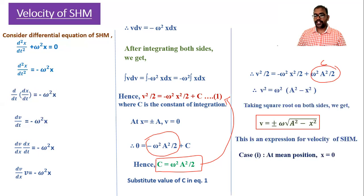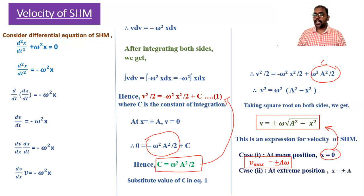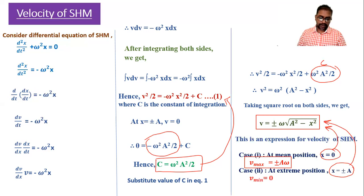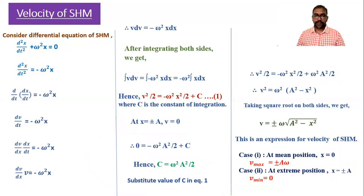Two cases for velocity: at mean position, x = 0, giving maximum velocity v = ±aω. At extreme position, x = ±a, substituting gives velocity = 0. So at extreme position velocity is zero, which is consistent with what we used earlier. This completes the expression for velocity.